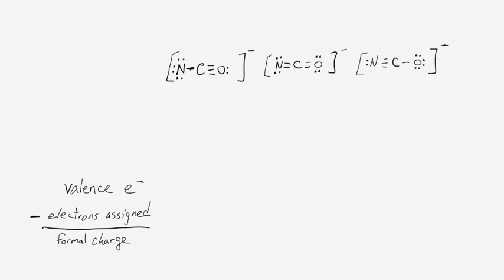Formal charges are a way of tracking the electrons in a Lewis structure. A formal charge for any given atom is effectively the charge that that atom would have if it was equally sharing the electrons within its bonds. The way we calculate the formal charge is by looking at each atom one by one in the molecule — we pick this atom off the periodic table and ask how many valence electrons would it have.